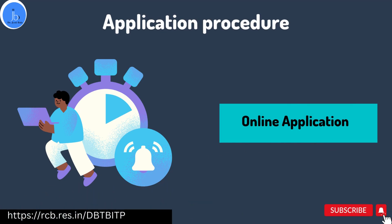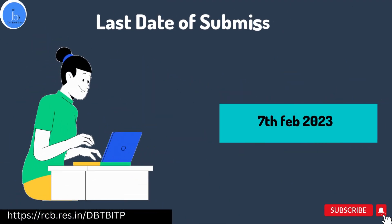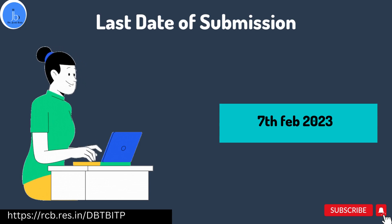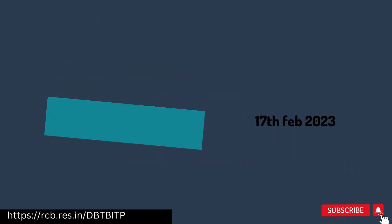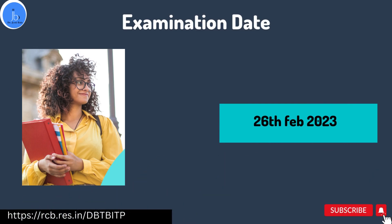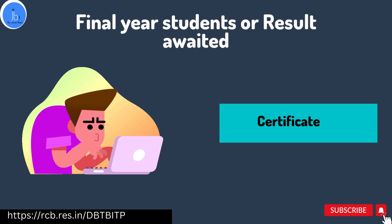The application is online. Detailed information regarding the training program, application form, fee payment, and required documents is available on the official site — I will be putting the link in the description. The last date for submitting the application is 7th February 2023. Hall tickets and admit cards can be downloaded till 17th February, and the date of the test is 26th February. Students appearing for their final exam or waiting for results need to provide a certificate from their college — the format is provided on the site; you just have to download and get it signed and sealed by your HOD or Head of the Institute.